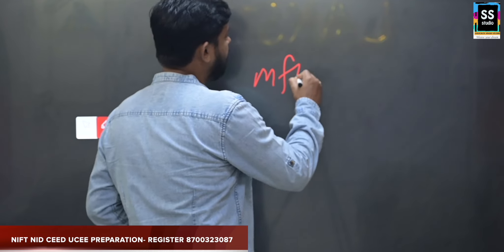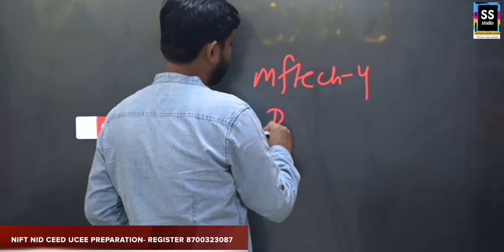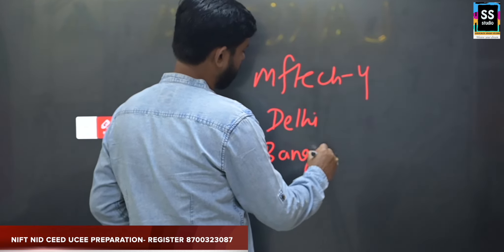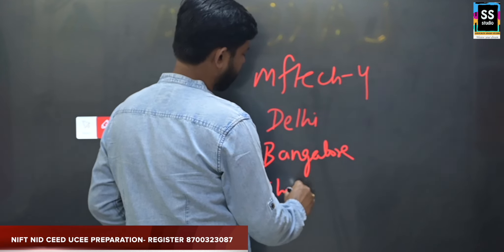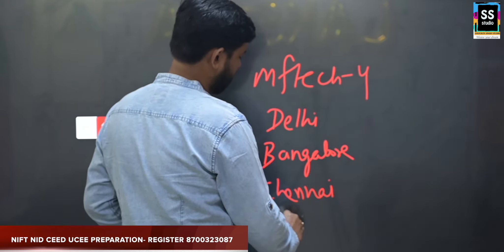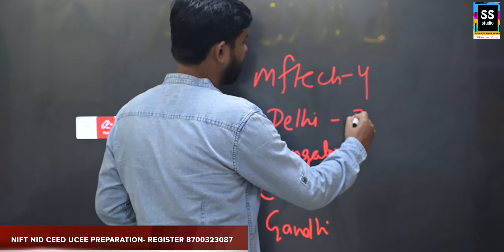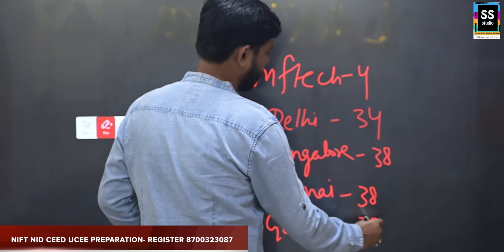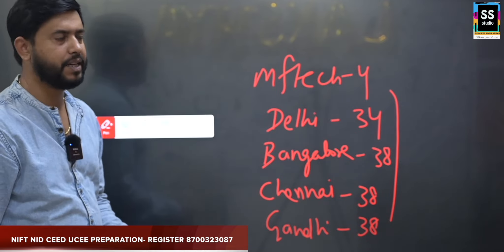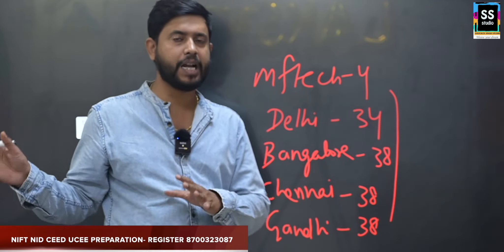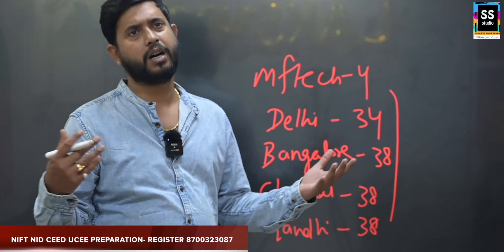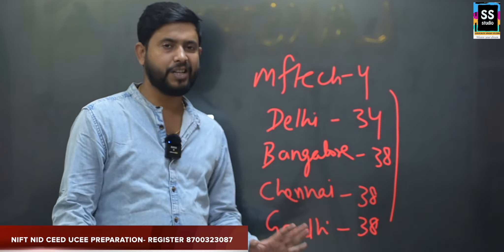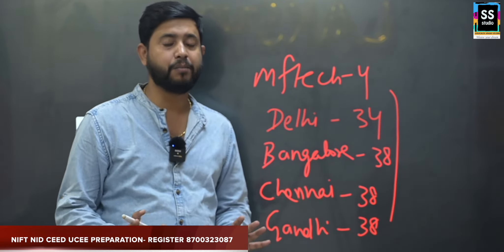For MFTech there are only 4 campuses: Delhi, Bangalore, Chennai, and Gandhinagar. Delhi has around 34 seats and the rest have 38 seats each. If you calculate the overall number of seats, you can divide by 2 — roughly 50% for general and 50% for SC, ST, OBC, EWS, and PWD. It is a simple calculation and assumption we are working with here.